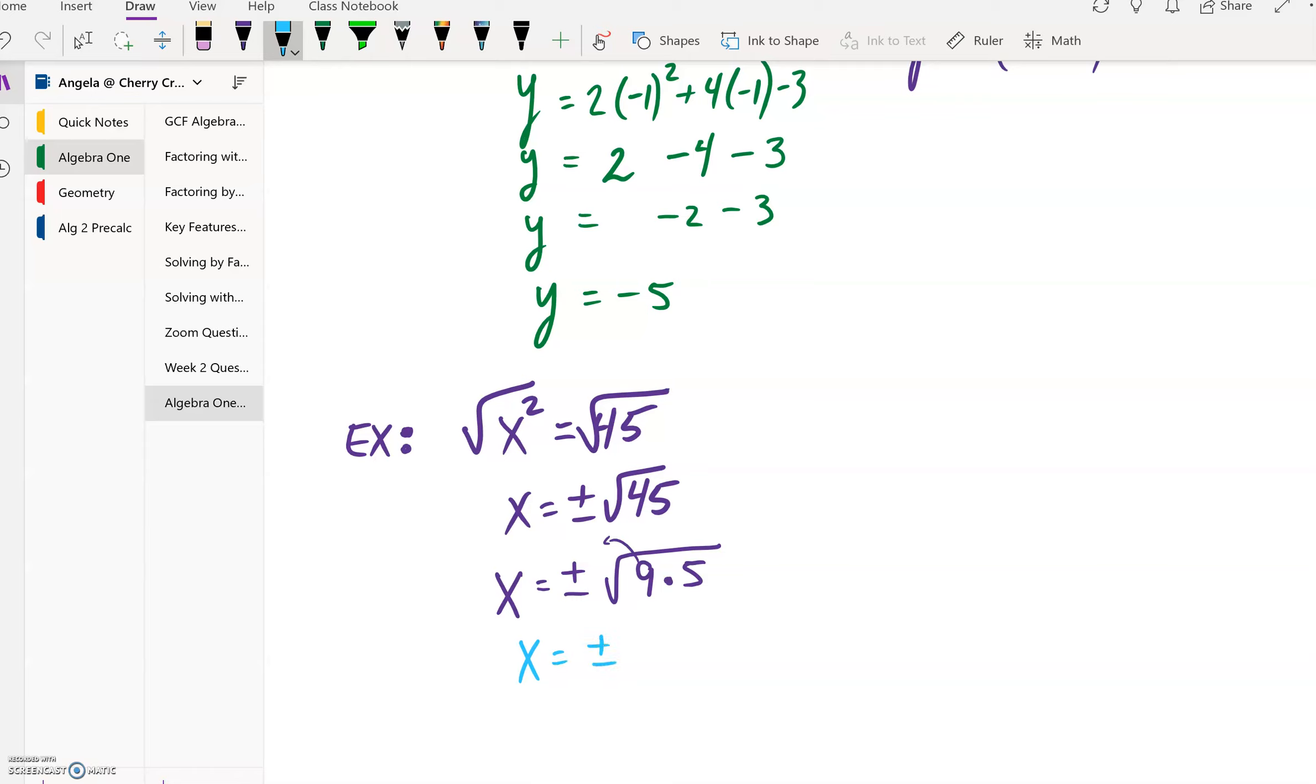So our final answer here is going to be x = ±3√5. The square root of 9 is 3, and the √5 stays.